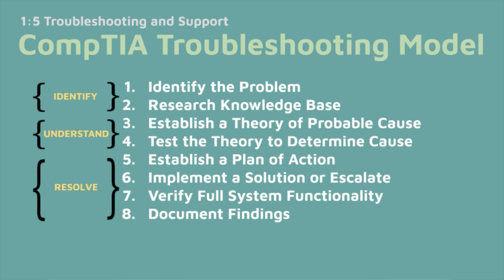The first step is identify the problem. Step two, research knowledge base. Step three, establish a theory of probable cause. Step four, test your theory. Step five, establish a plan of action. Step six, you're going to implement a solution. After that, you're going to go to step seven, where you're going to verify full system functionality. And step eight, you're going to document your findings.